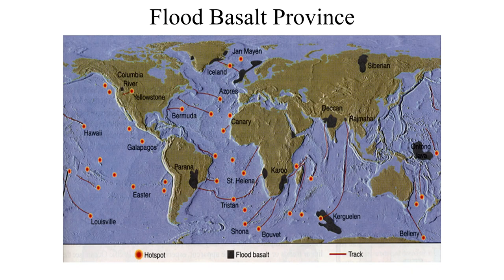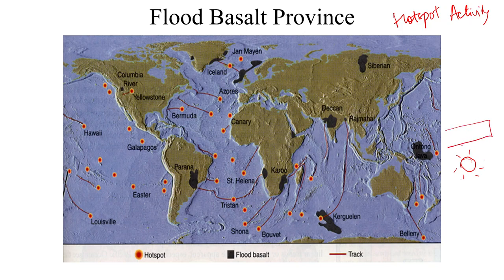Looking at a map of flood basalts of the world, we can understand that all of these large igneous provinces were formed by hotspot activity. Where a plate passes over a hotspot, the areas directly above are affected by that hotspot activity, and flood basalts are formed. There are several such volcanic provinces and associated flood basalts.